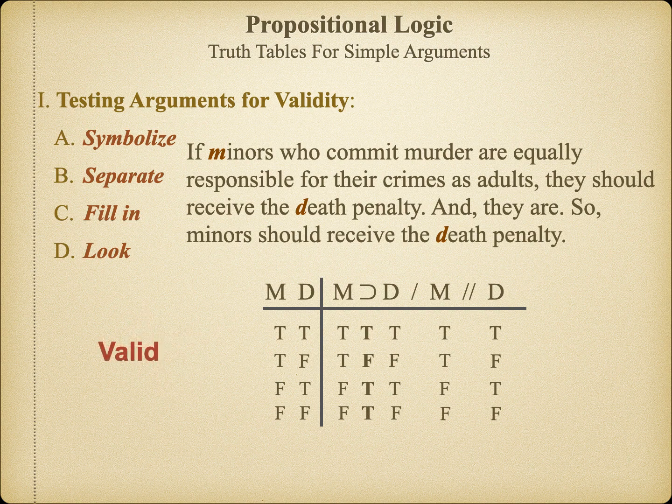This is one of the most common forms of deduction in propositional logic. It was first identified by Theophrastus, a student and successor of Aristotle, who was the first philosopher to clearly delineate the difference between induction and deduction. This argument is called modus ponens, or the way of affirmation, since we're affirming the antecedent of the first premise.